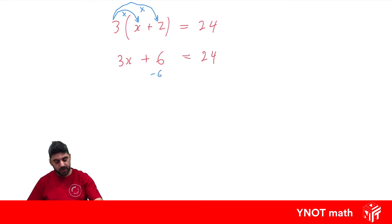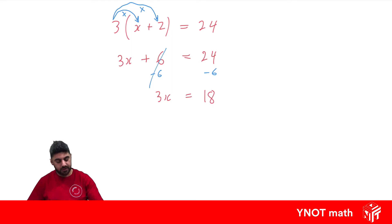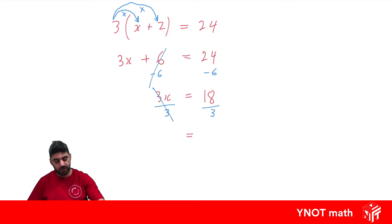We'll get rid of the 6 first by minusing 6 from both sides, because 6 minus 6 is 0. We're just left with 3x on that side, and 24 minus 6 gives us 18. Now we can divide both sides by 3, because 3x means 3 times x, and the opposite of times 3 is dividing by 3. 3 divided by 3 is 1, so we're left with x, and 18 divided by 3 is 6 — our final answer.